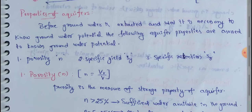Here we will cover three properties: porosity (n), specific yield (Sy), and specific retention (Sr). In this video, we will discuss these three properties.